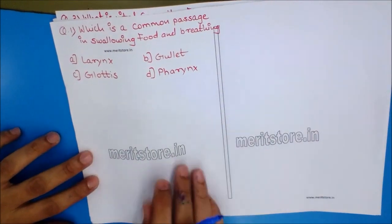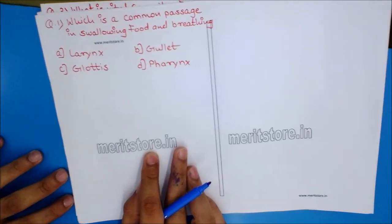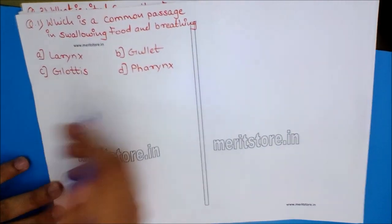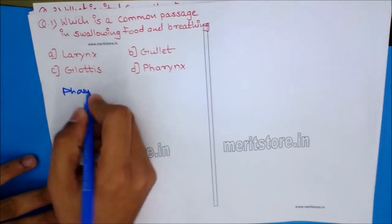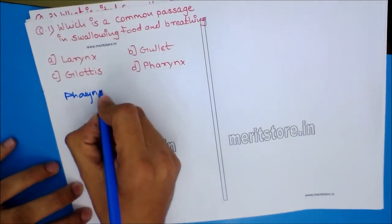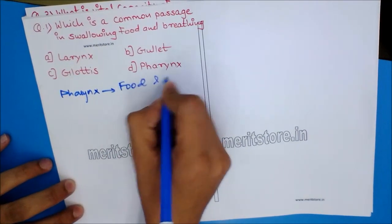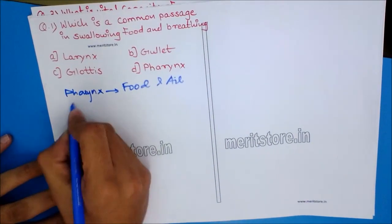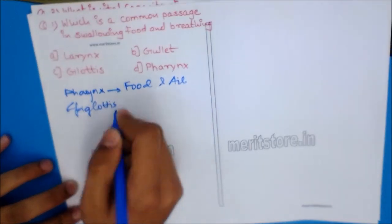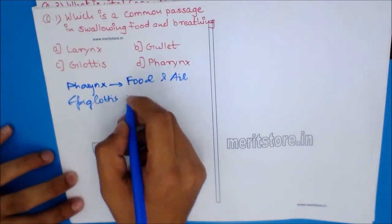Question 1: Which is a common passage in swallowing food and breathing? Options: A) Larynx, B) Gullet, C) Glottis, D) Pharynx. The pharynx is a part of our body where the respiratory and digestive systems share a passage, allowing passage of both food and air. It shows presence of an epiglottis near the entry point to avoid entry of food in the air pipe.